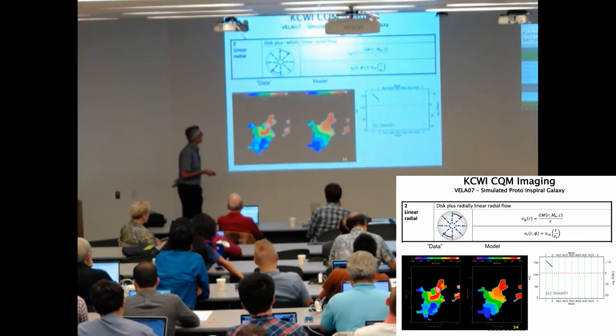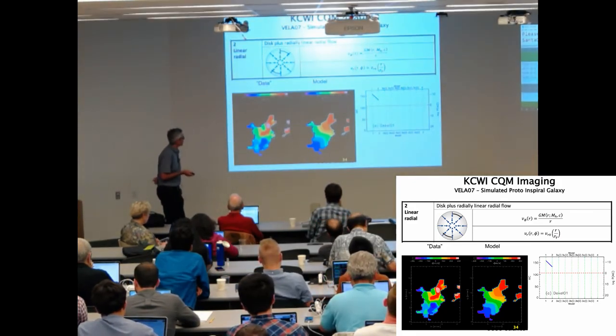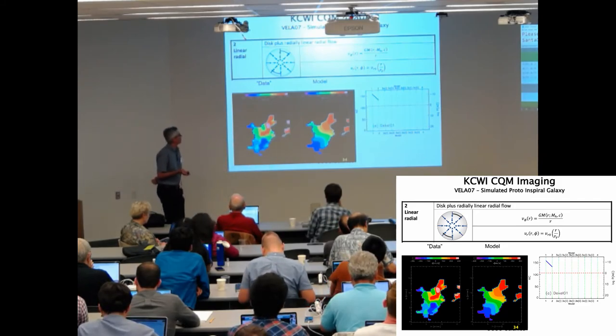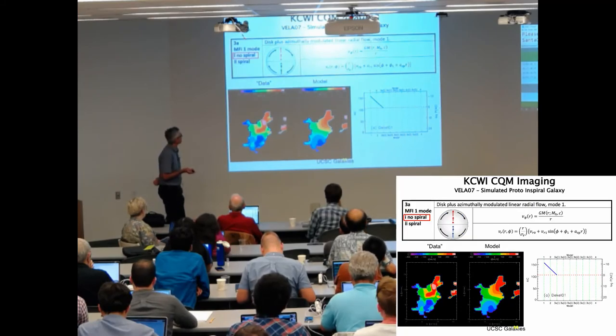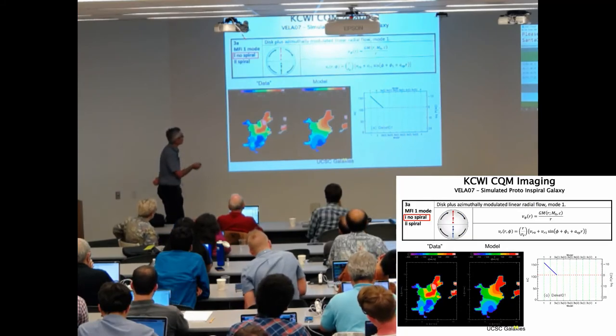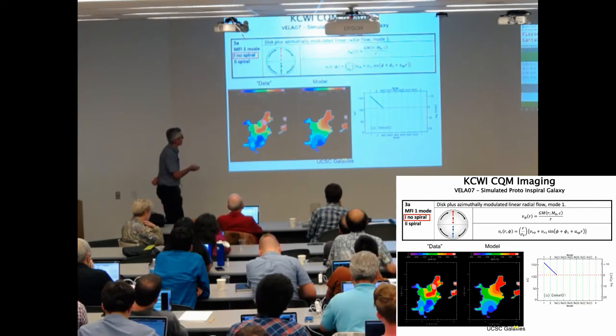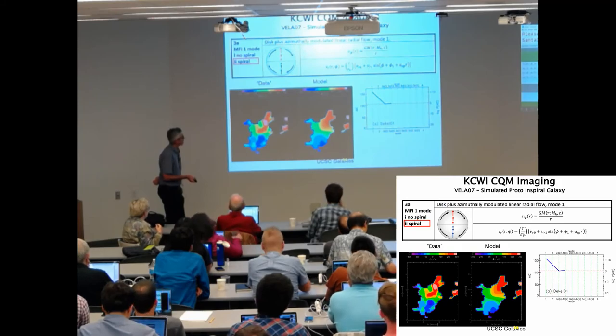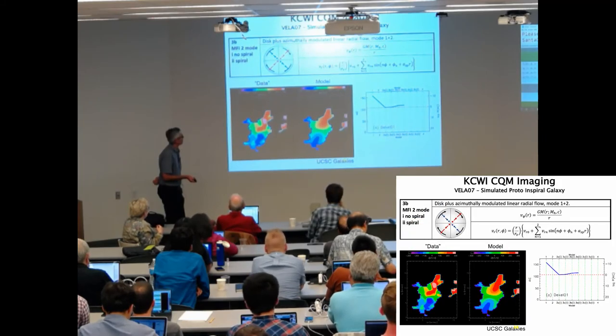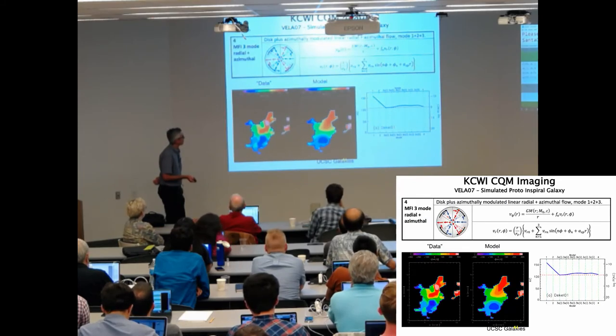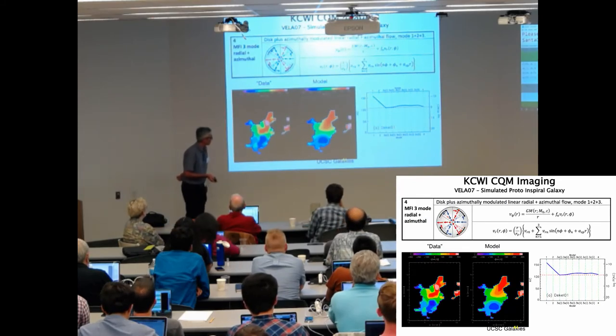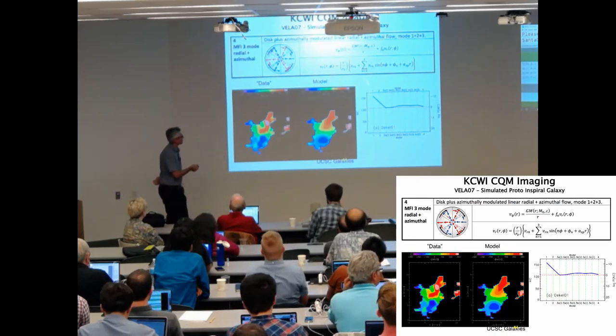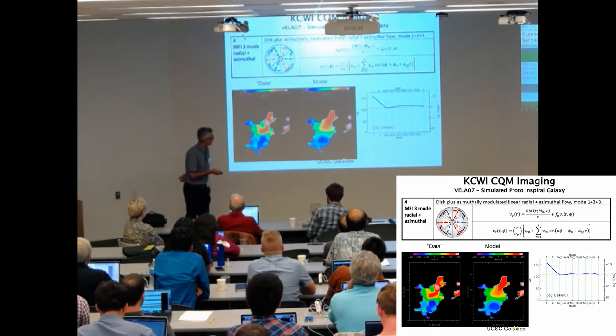But add this azimuthal modulation, one mode, and it goes down very significantly. And then continuing to add more, you can make that a spiral. You can add a second mode, a third mode, and you can modulate the azimuthal velocity as well. And basically, you get a good result just adding the first azimuthally modulated mode.